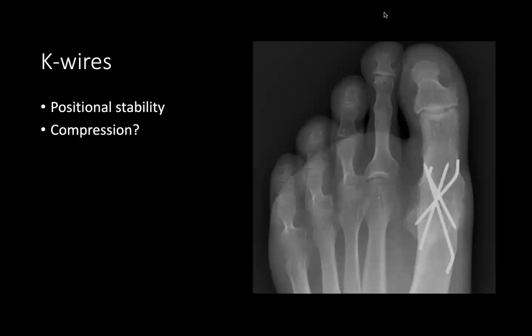K-wires provide positional stability and can be used as temporary fixation or left in permanently. They can also provide some compression using a bent K-wire technique — an old-school technique for chevron osteotomies or first metatarsophalangeal fusions.